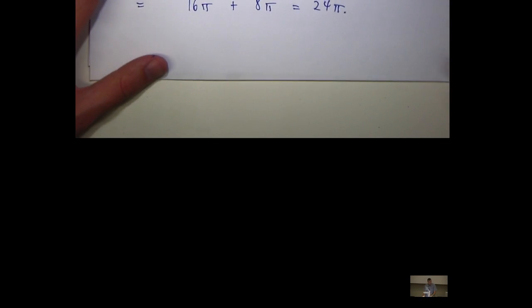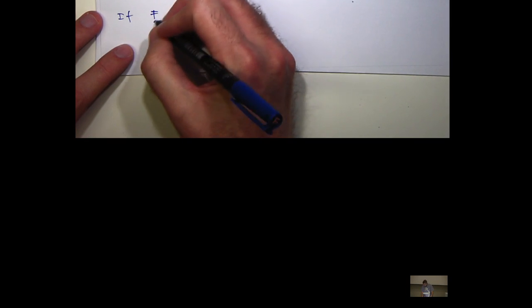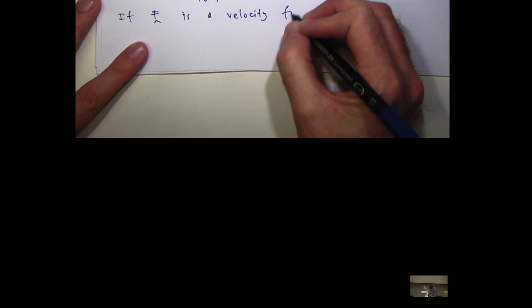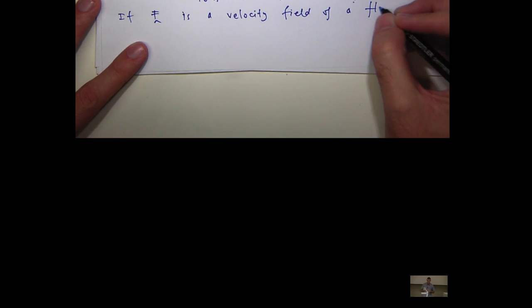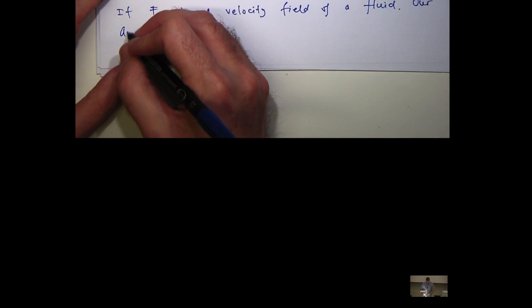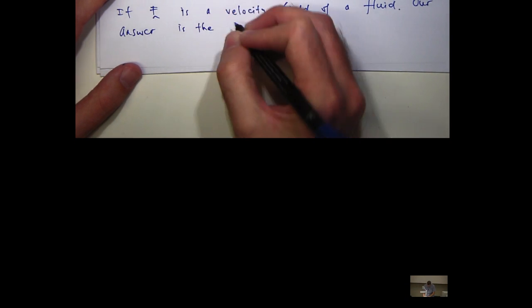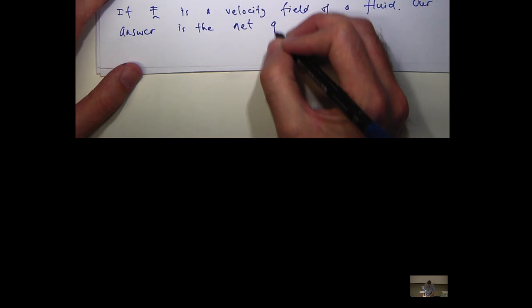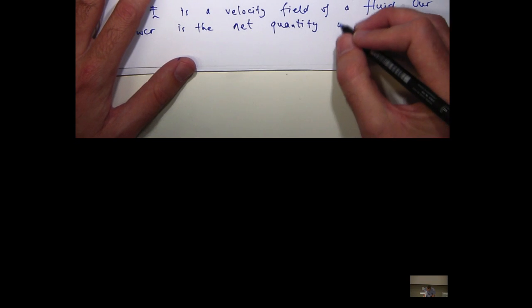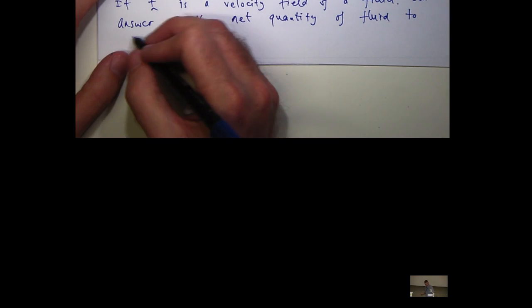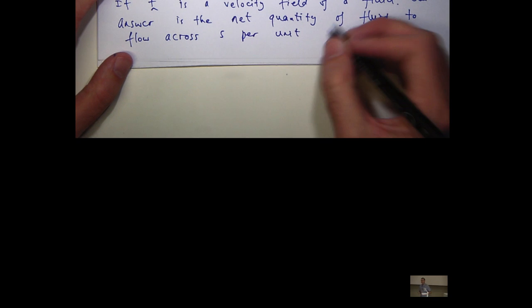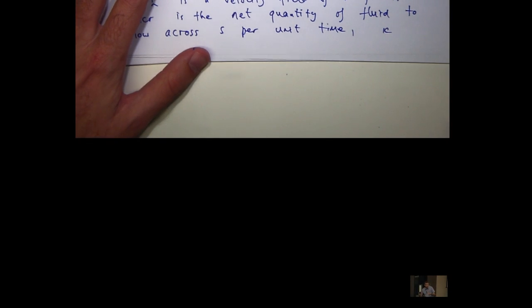One way of interpreting this is the following. So let's say f is a velocity field of a fluid. Now, our answer is the net quantity of fluid to flow across the surface S per unit time. So if you want to just sort of boil that down, you just call it a flow rate.